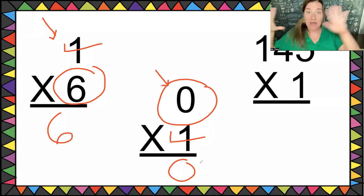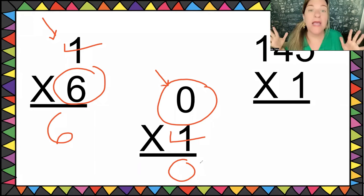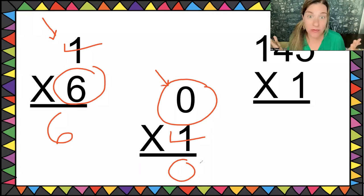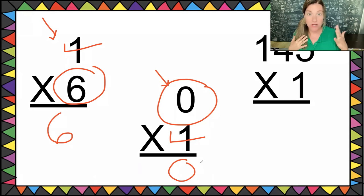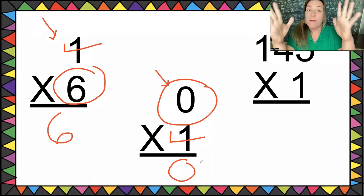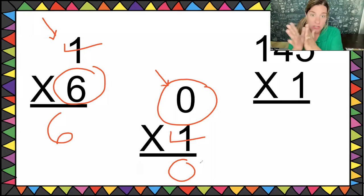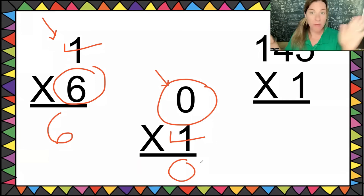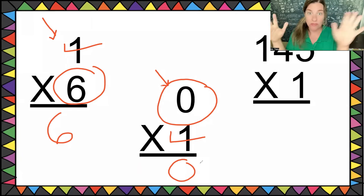When you're comfortable with all these rules, you can choose which one you want to use — whichever is easier for you. I don't care which one you use. What your parents, teachers, and I want is for you to know the answer to zero times one, no matter how you get it.